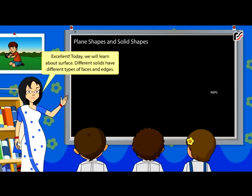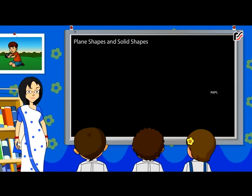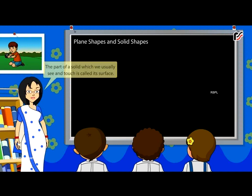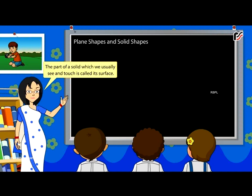Different solids have different types of faces and edges. What is surface? The part of a solid which we usually see and touch is called its surface. An object may have different types of surfaces.